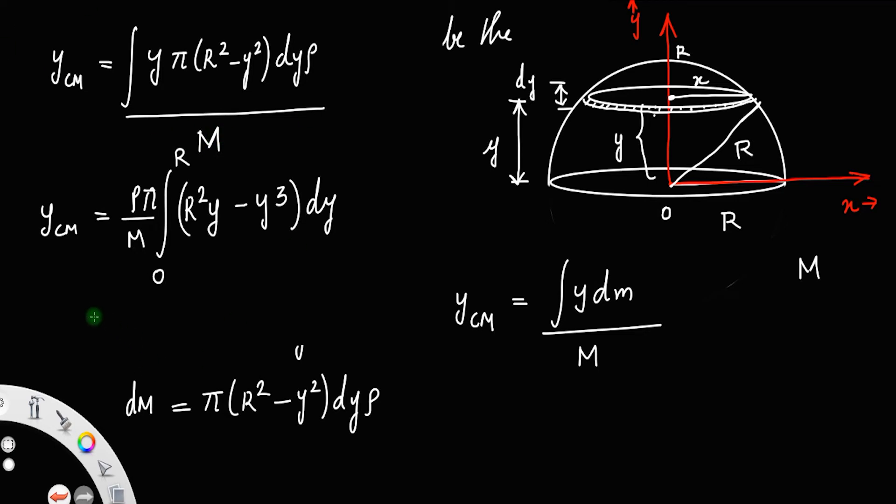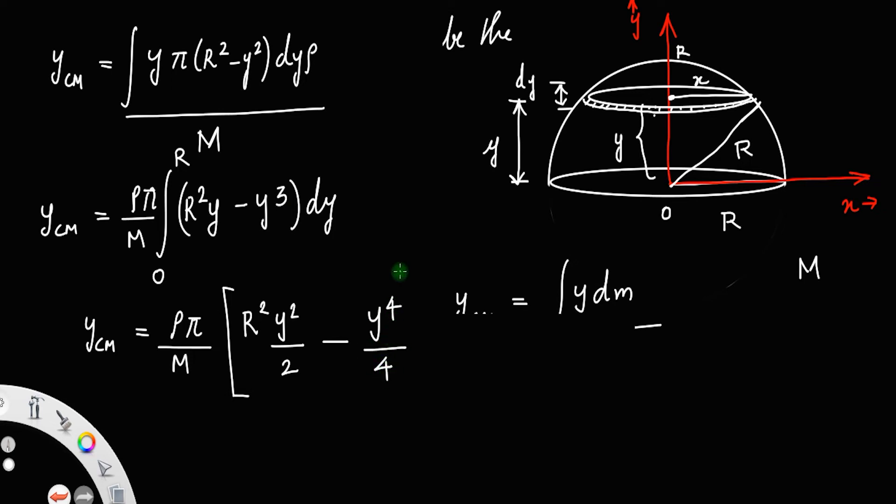On solving this you will get y_cm is equal to pi rho by M, integral of y is r squared times y squared by 2. This r is constant, minus integral of y cubed is y raised to 4 by 4. Put the limit 0 to r.